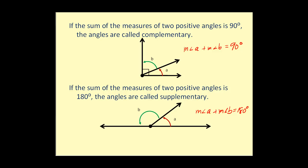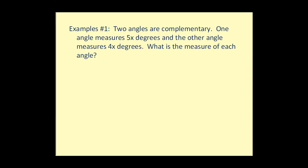Let's go ahead and take a look at a couple examples. Two angles are complementary. One angle measures five x degrees while the other measures four x degrees. What is the measure of each angle?